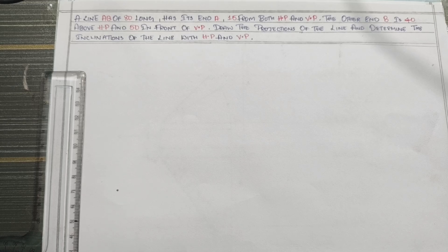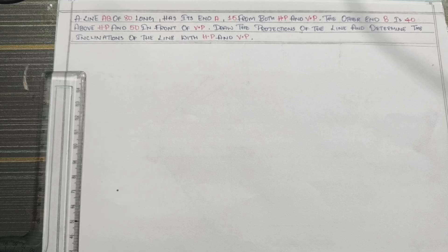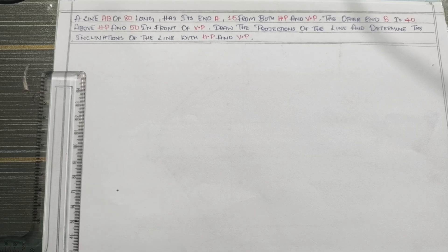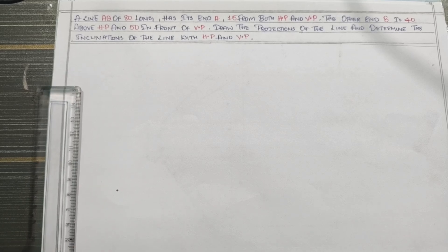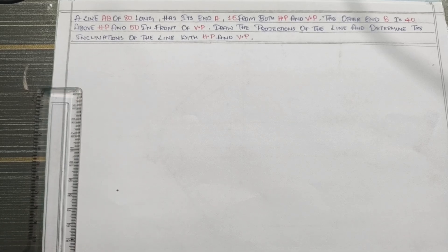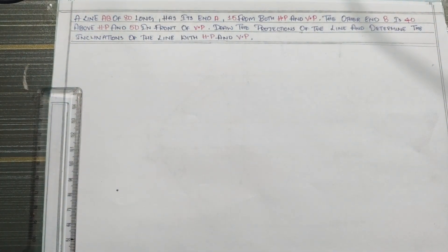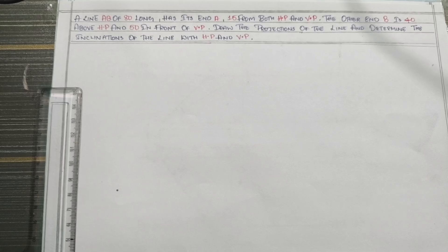Question 2: AB is 80. A end is 15 from both HP and VP. The other end B is 40 above the HP, 50 in front of the VP. This is the condition. Draw the projection of the line and find the inclination of the line with HP and VP.